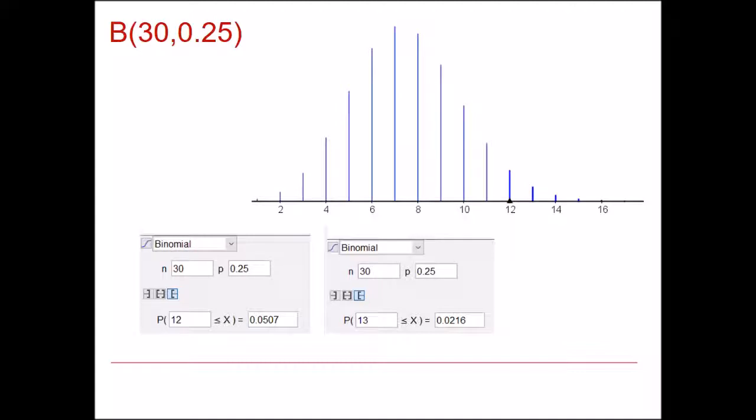You can work this out from your calculator or from a statistical package and find that the probabilities at 12 and 13 are the ones you need to be interested in. Getting 12 or more ones on a fair four sided dice has a probability of about 5.07%, so slightly above our significance level. But getting 13 or more ones on our four sided dice is just over 2%. So that one would be rejected in our hypothesis test.